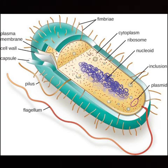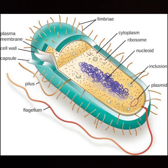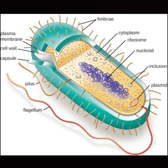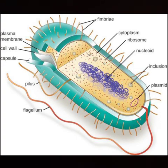Genetic exchange in Prokaryotic cells occurs through Conjugation, Transformation, and Transduction. In the case of Eukaryotic cells, genetic exchange is through gamete fusion.